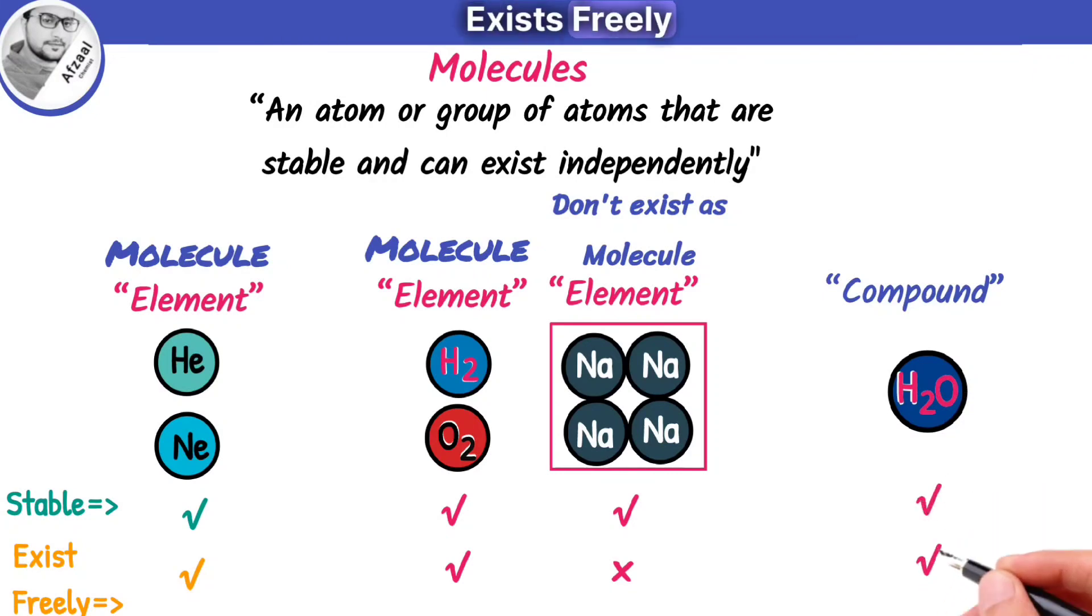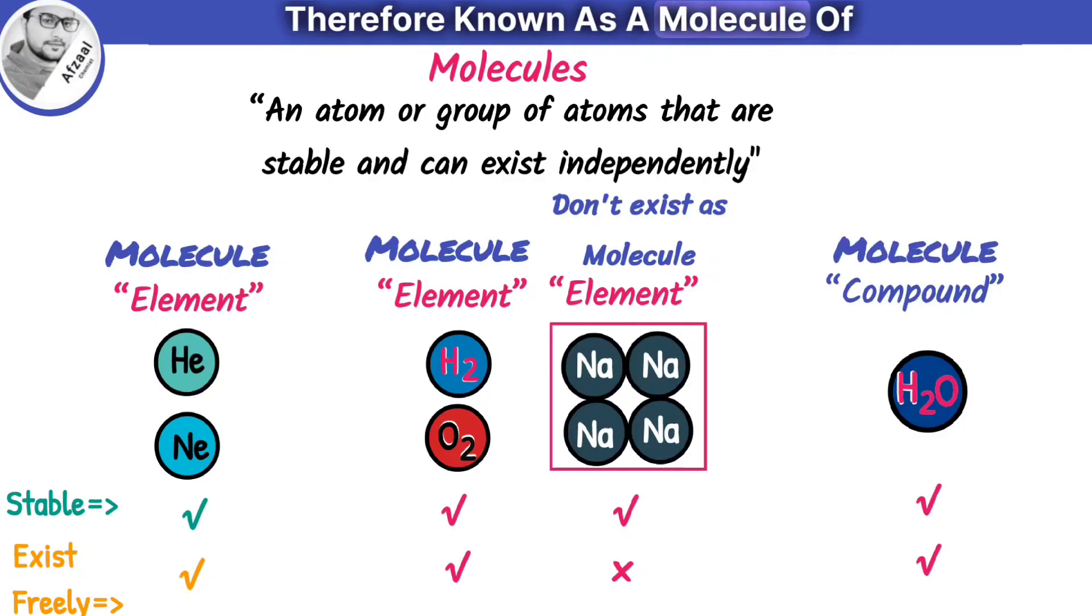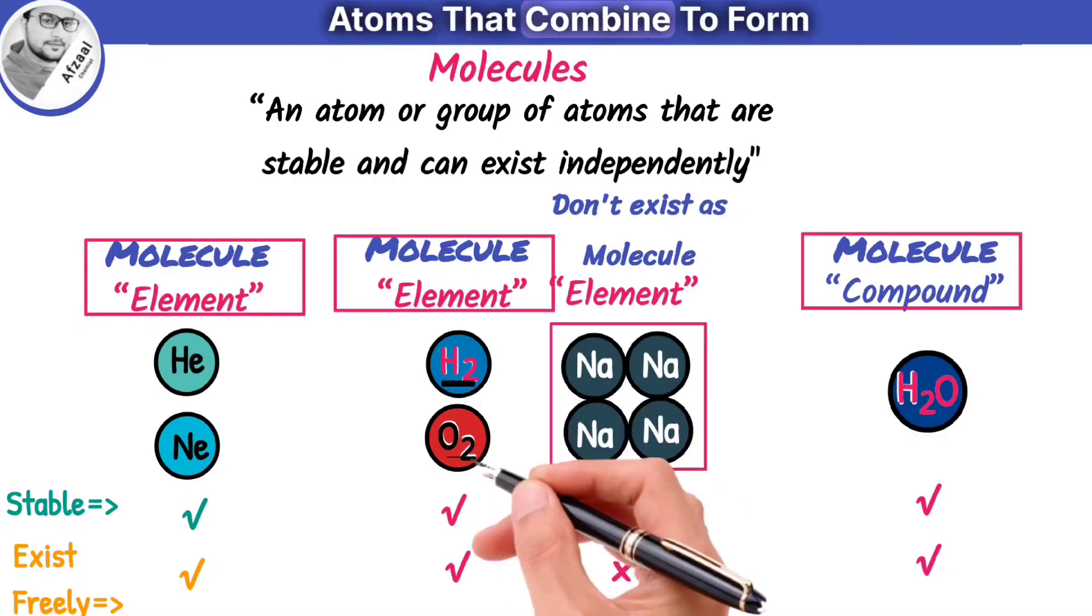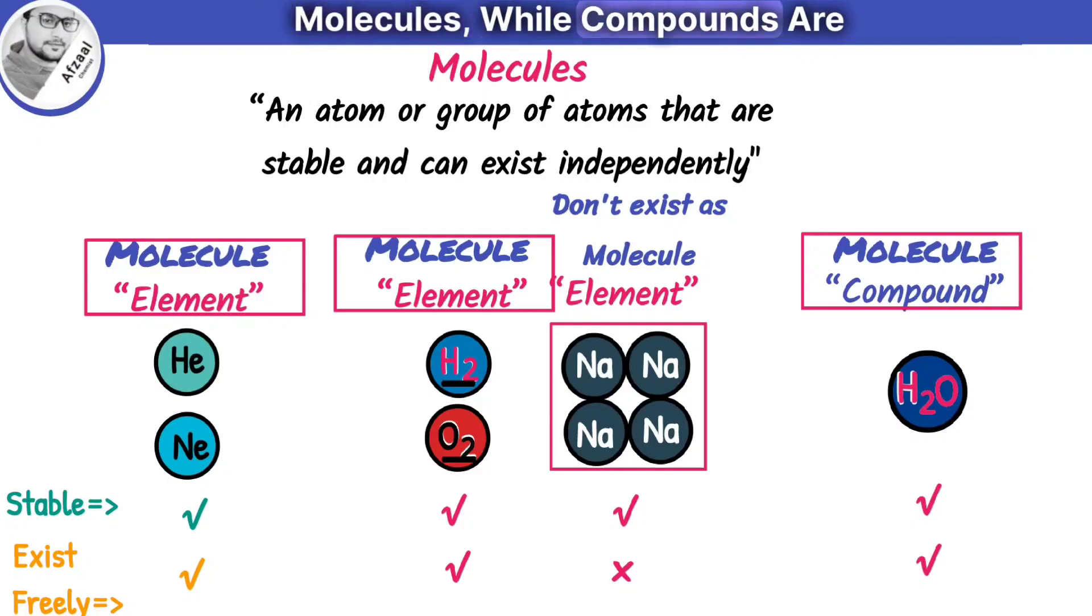In conclusion, molecules can be made up of either element or compounds. Elements are single types of atoms that combine to form molecules, while compounds are made up of different types of atoms.